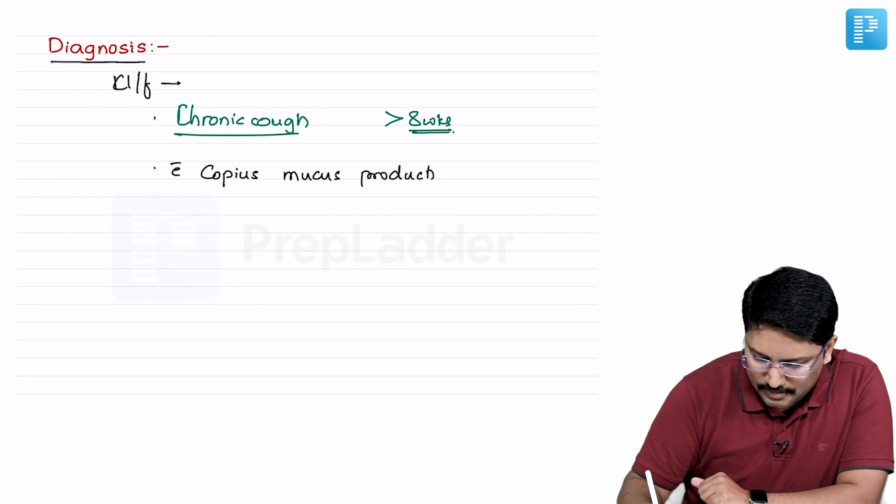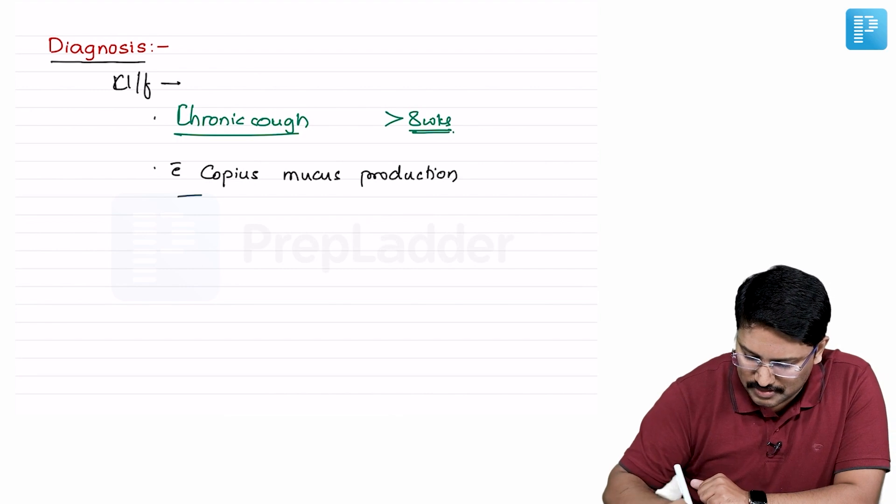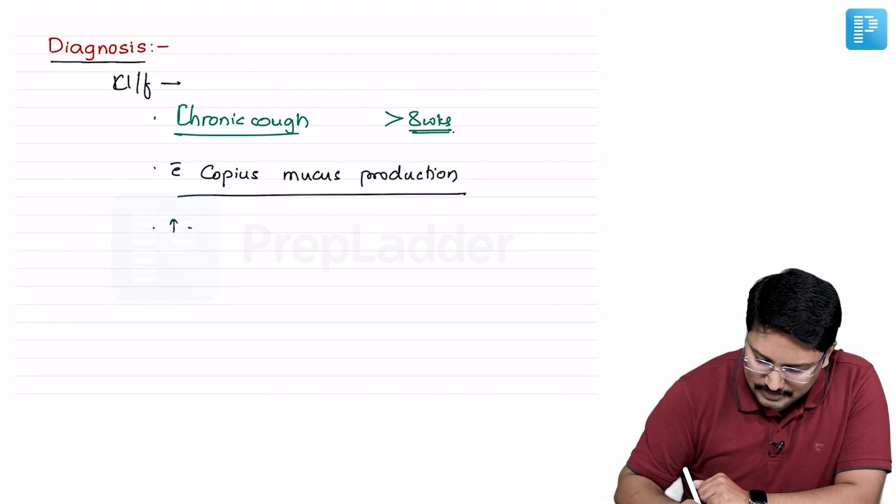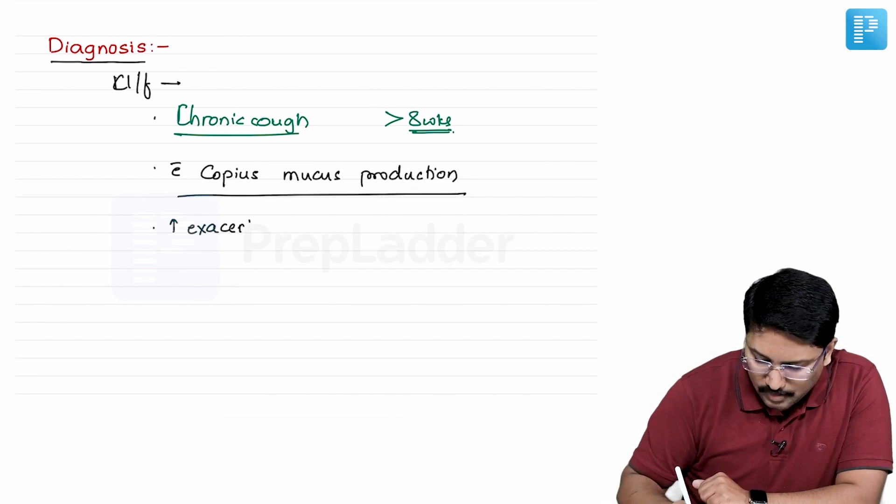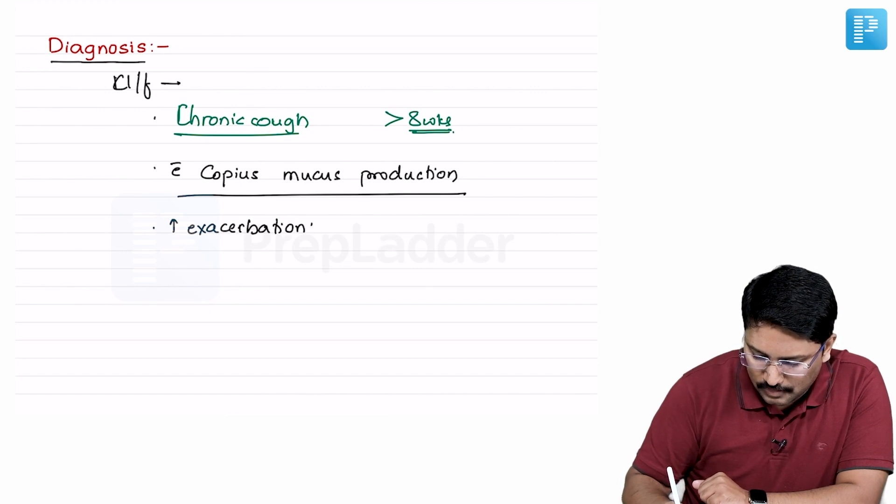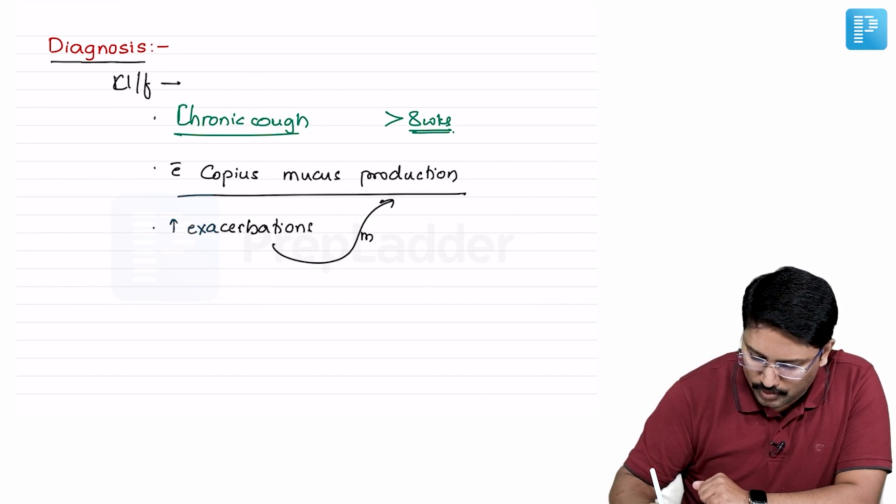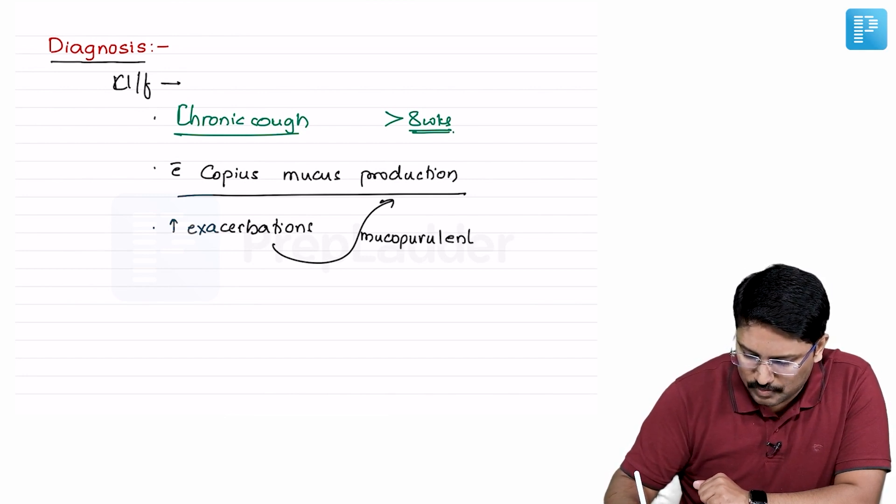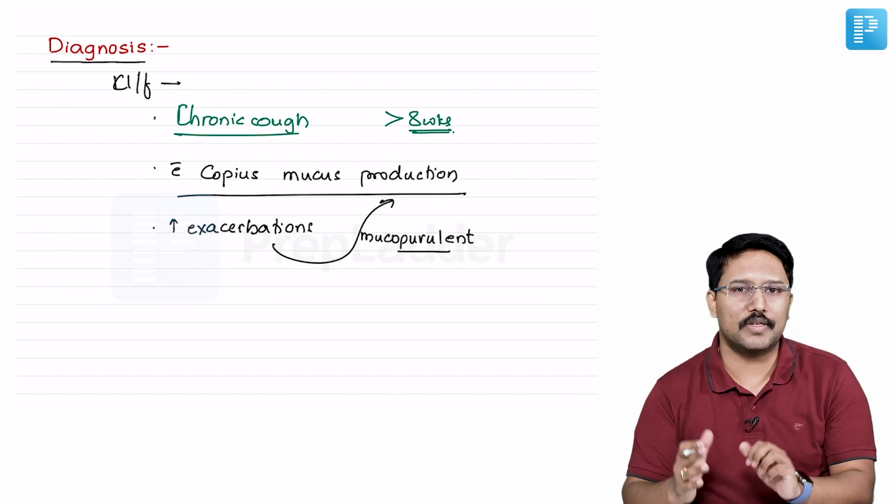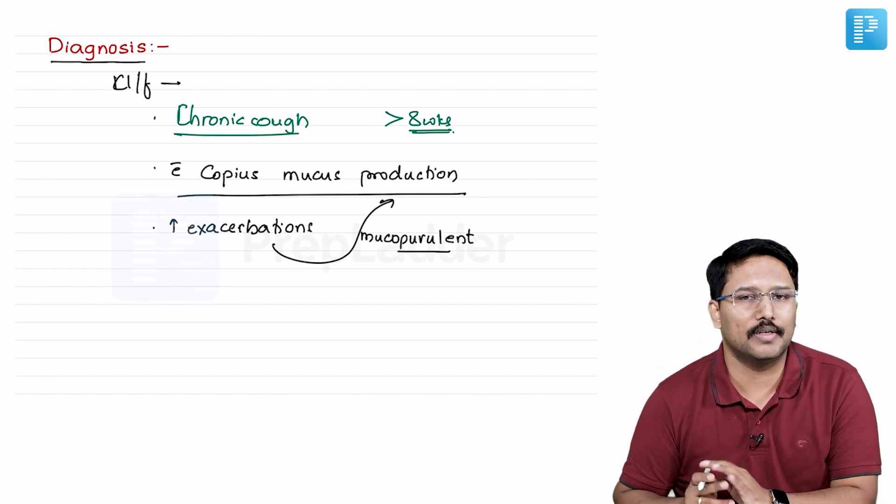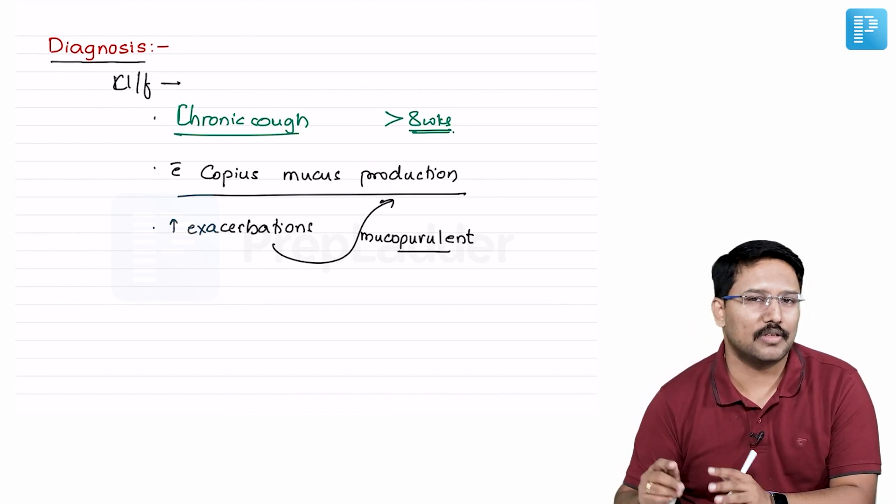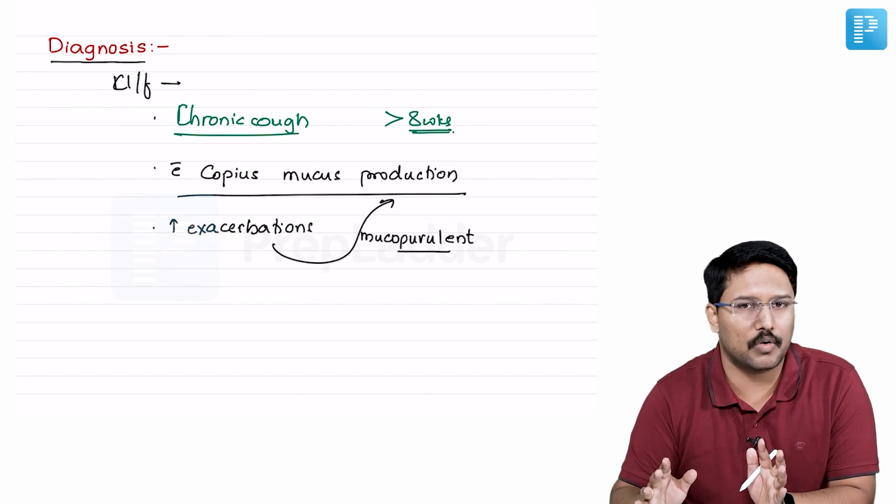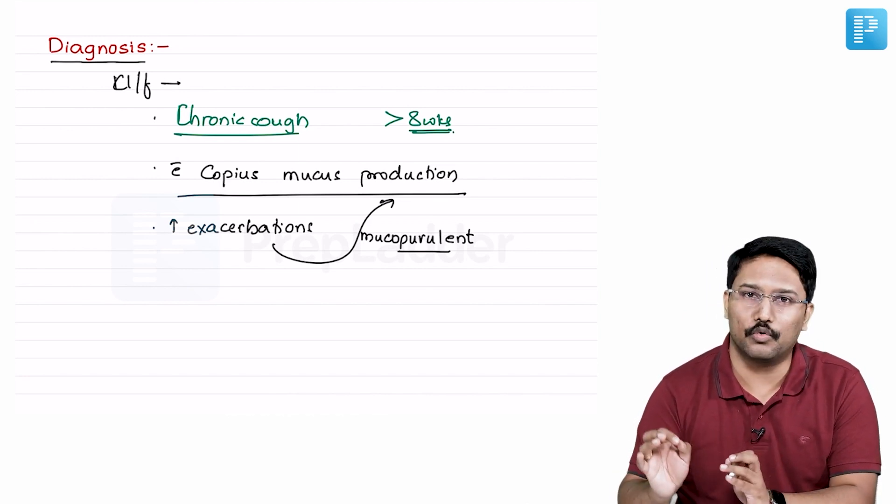You have to remember that it is not a stable case. Most of these patients have frequent exacerbations when this mucus becomes mucopurulent. Exacerbations are mostly because of infections. So that's the usual story - someone having long-standing cough presenting with frequent exacerbations. Otherwise there is increased mucus production, but during exacerbation it becomes mucopurulent.